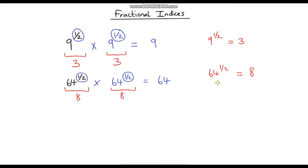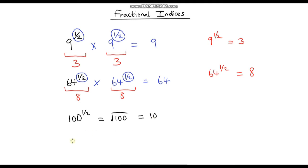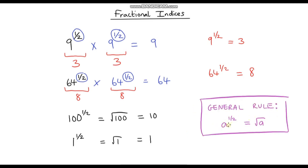I'd like you to spot a relationship between the base and our answer. Our answer is just the square root of the base — 3 is the square root of 9, and 8 is the square root of 64. So whenever we raise something to the power half, we are taking the square root. For example, 100 to the power half is the same as the square root of 100, which is 10. And 1 to the power half is the square root of 1, which is 1. The general rule: raising something to the power half is exactly the same as taking the square root of that number.